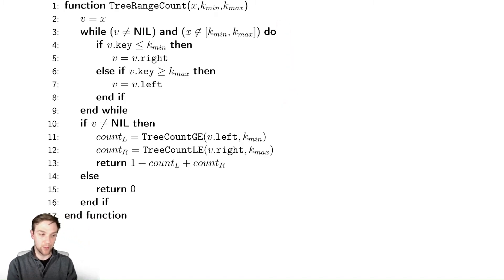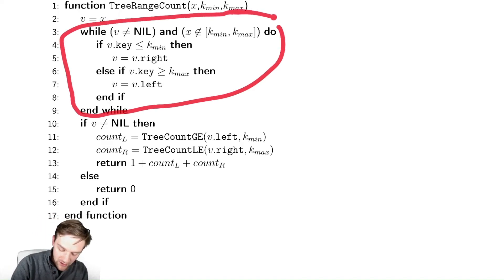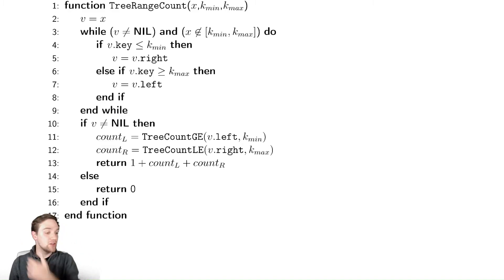We're going to first understand what this while loop does, and then we're going to try to use that idea to help us. This while loop, the very first loop here, is going to try to find any value in the tree in the range of values I'm interested in.